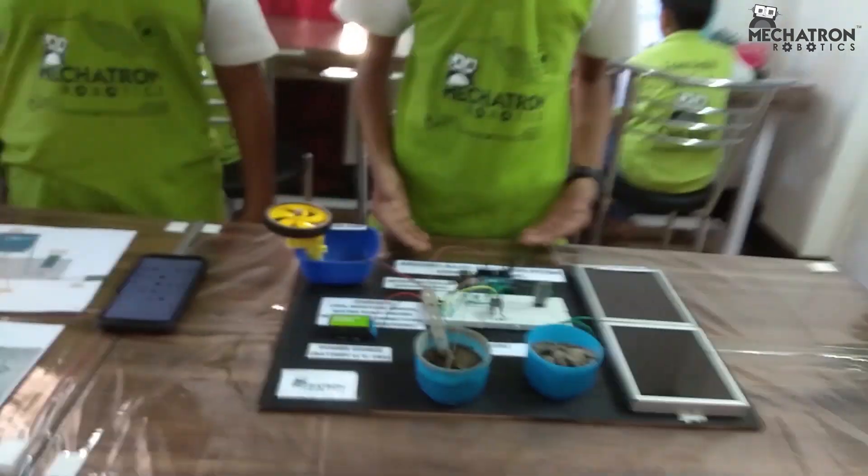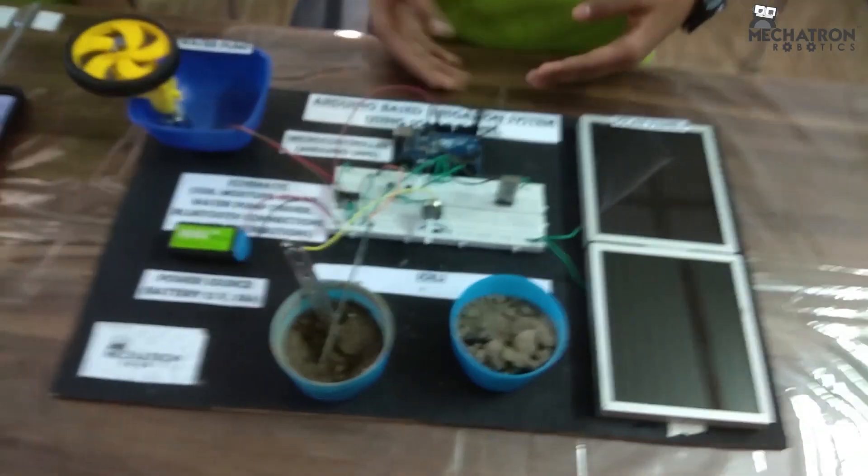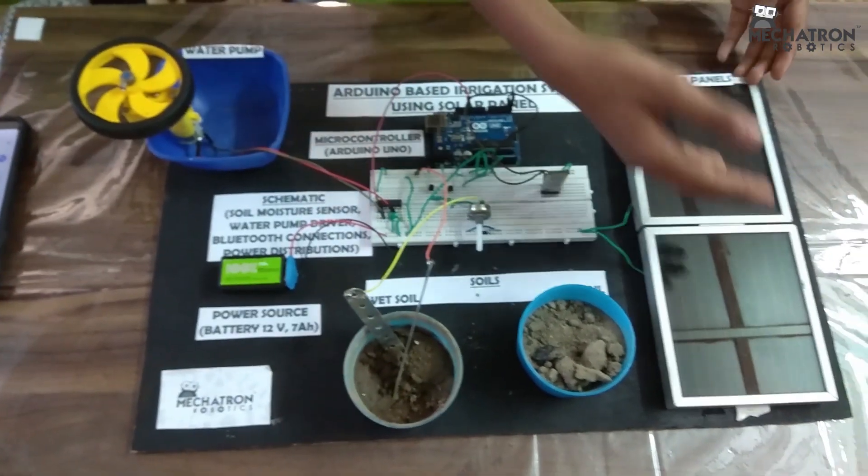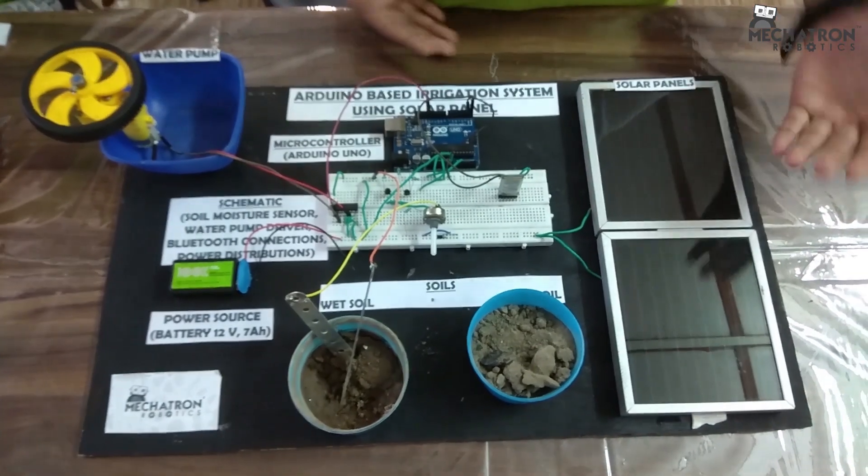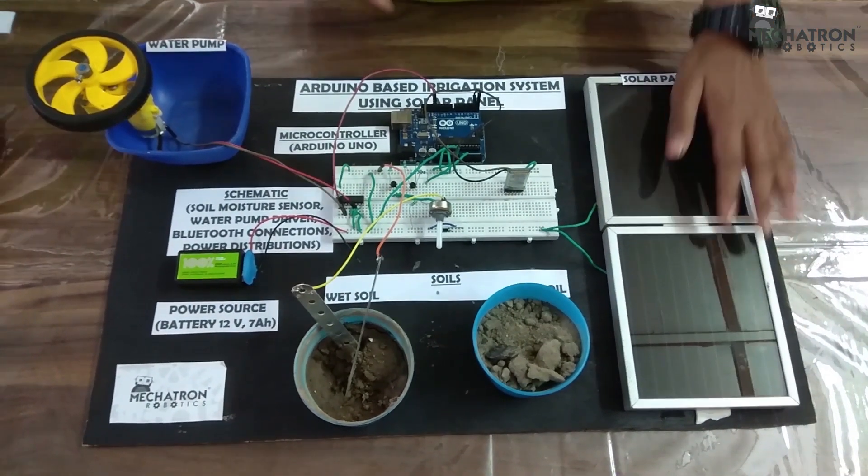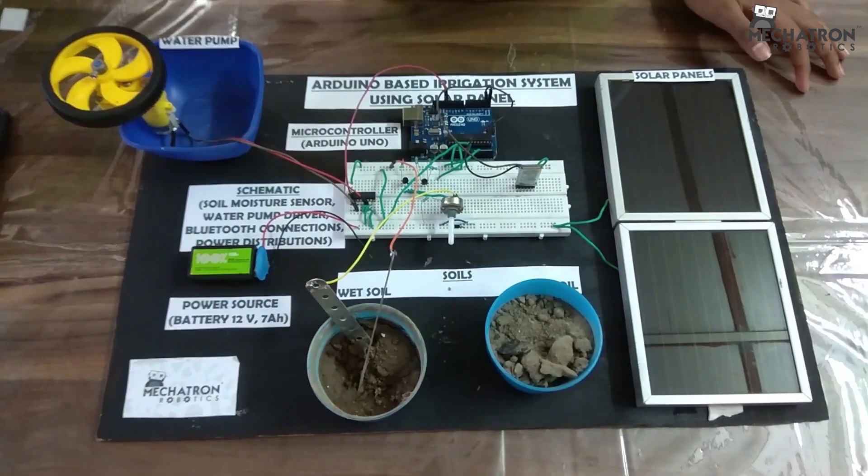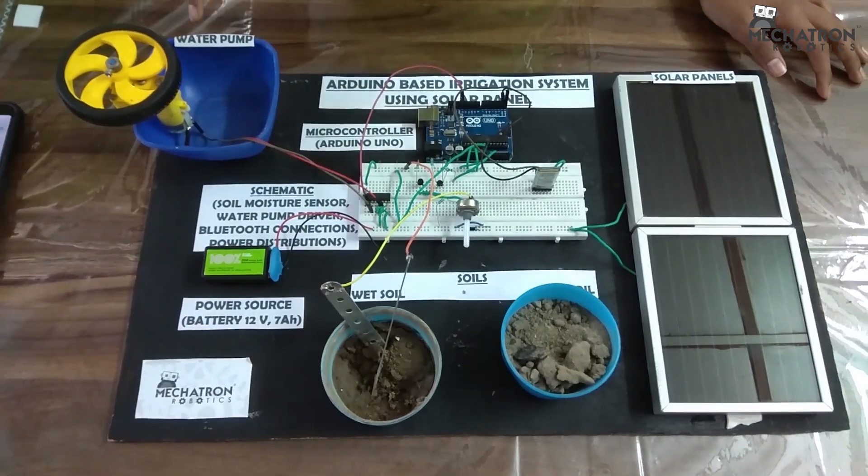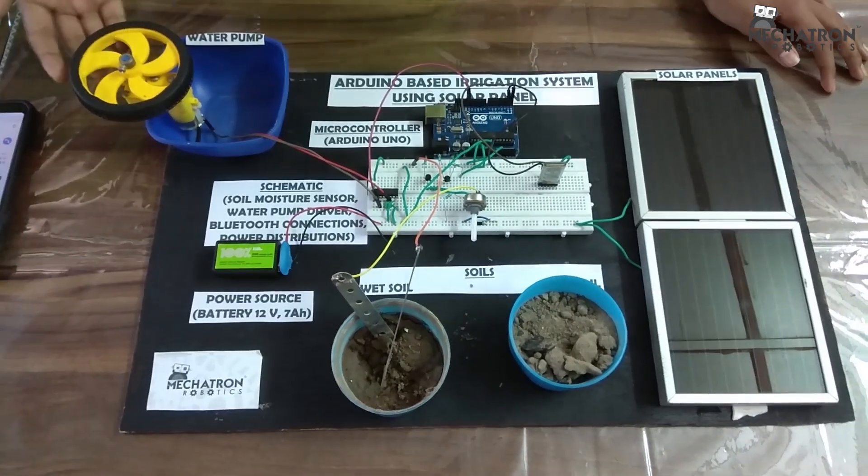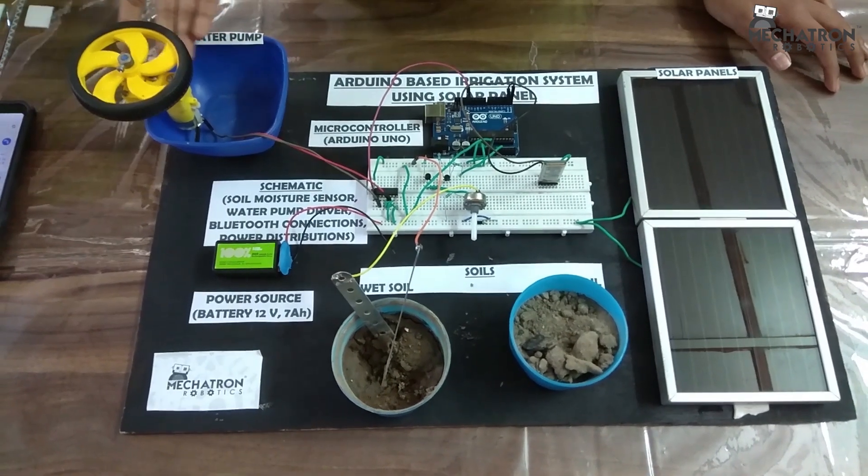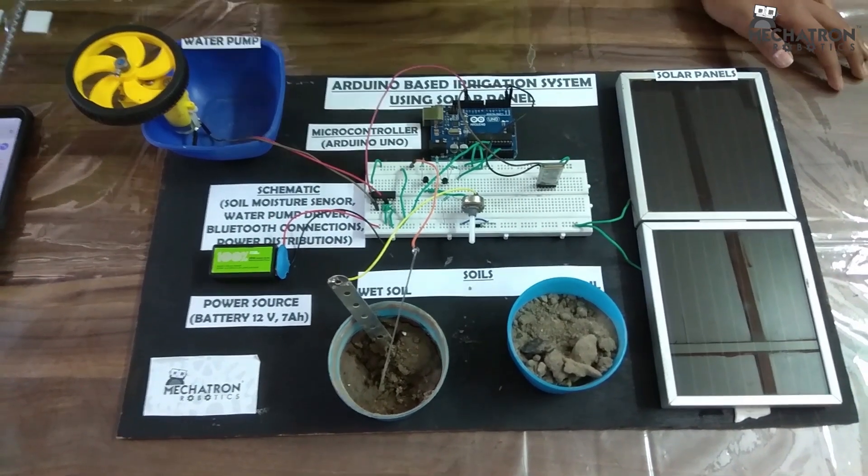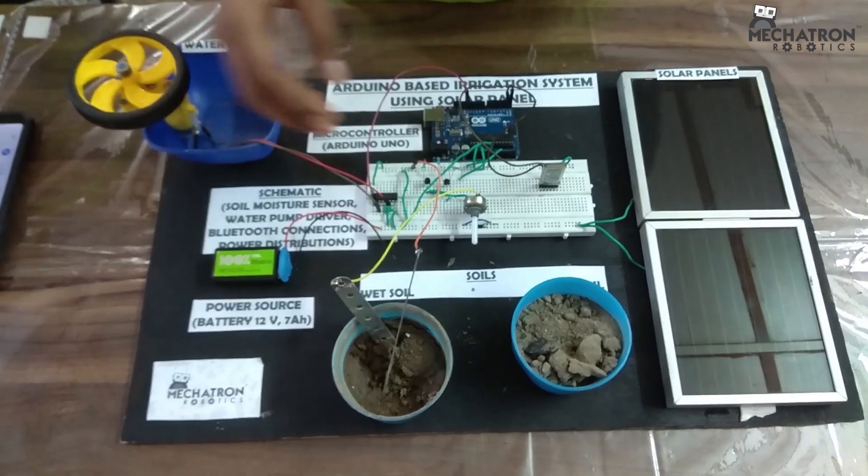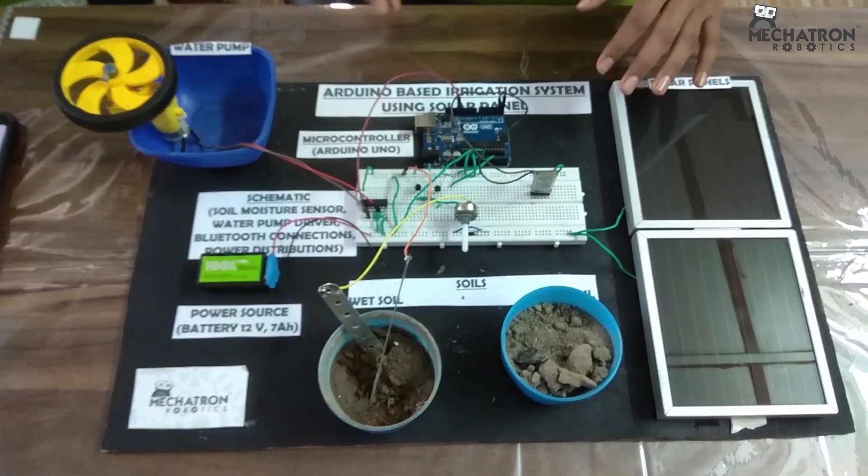This is the Arduino based irrigation system using solar panel. With the name, you can understand that these solar panels will help the battery to recharge. And in the motor, we have not put the water pump. Instead we have put the motor because this water pump we can use in large plots of land. Let me tell you how it happens.